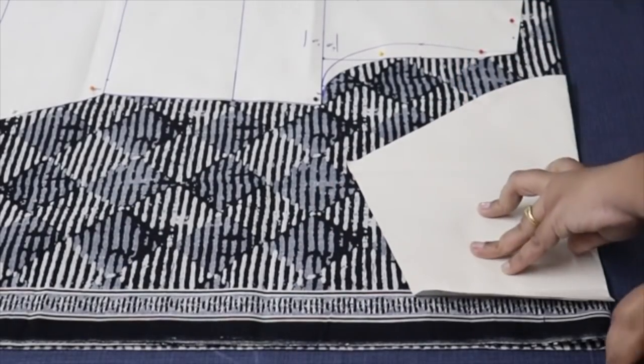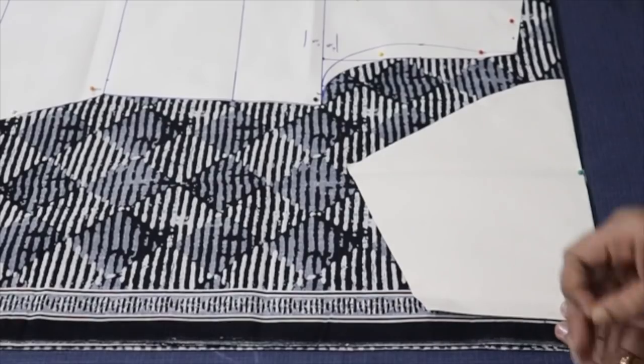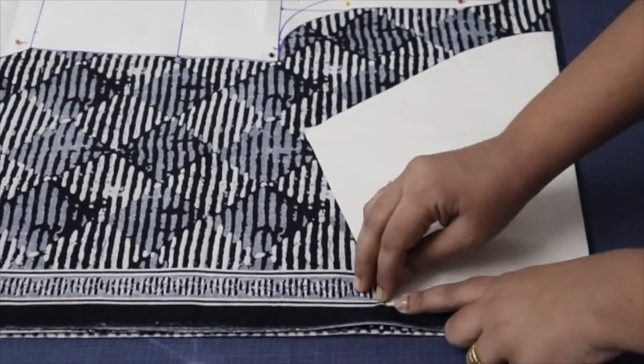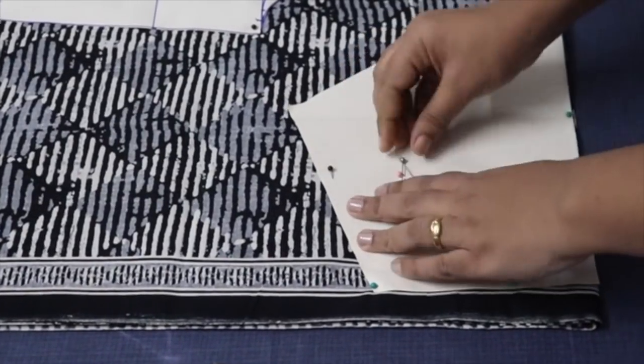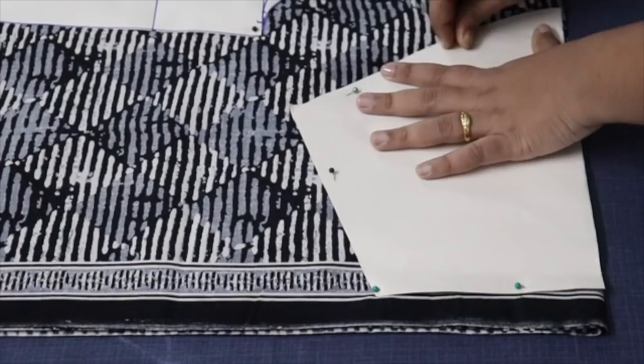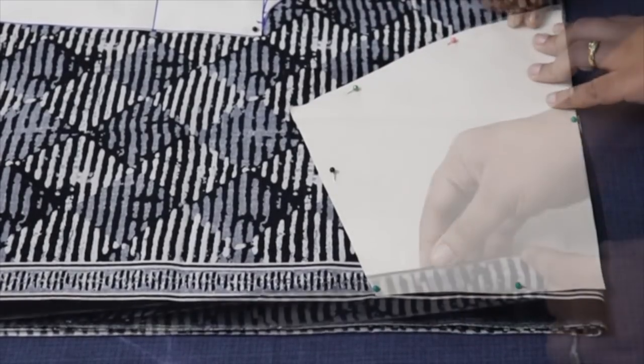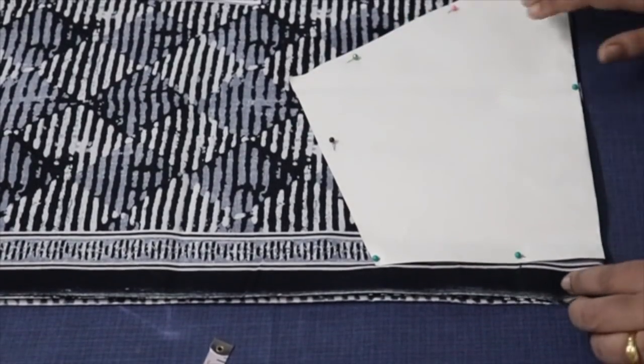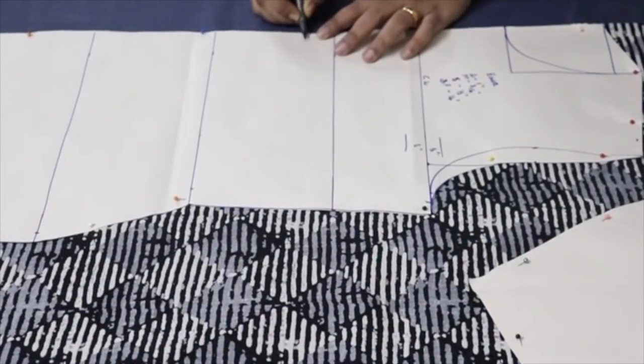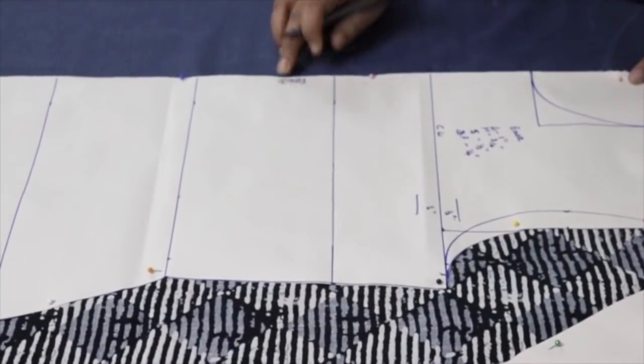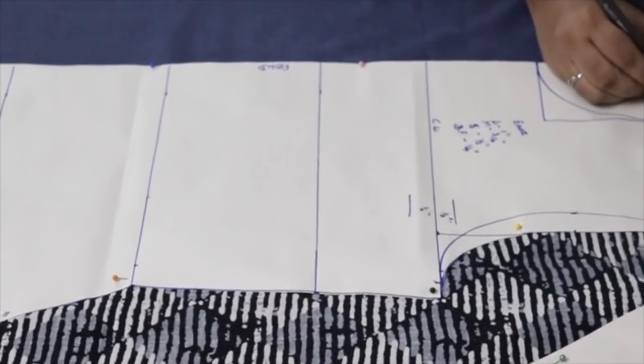Now take the sleeve part. Place it on the other side. So sleeve length side should be placed on the folded side. For sleeve also you have to keep four openings and two foldings same like top. So neck side it should be placed on the folded side.